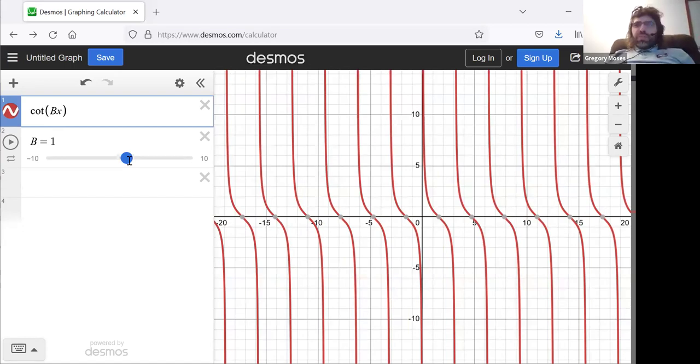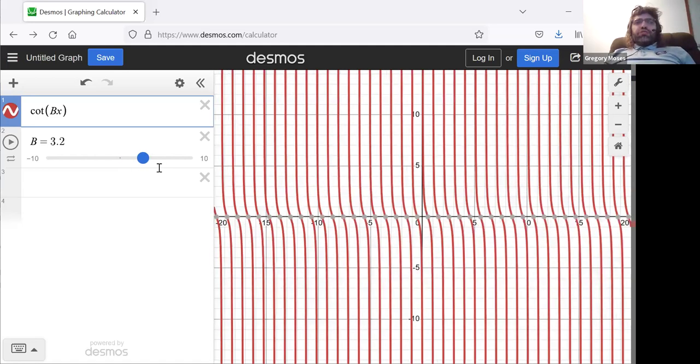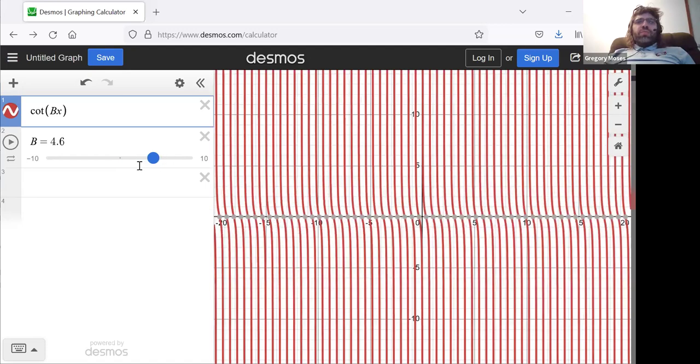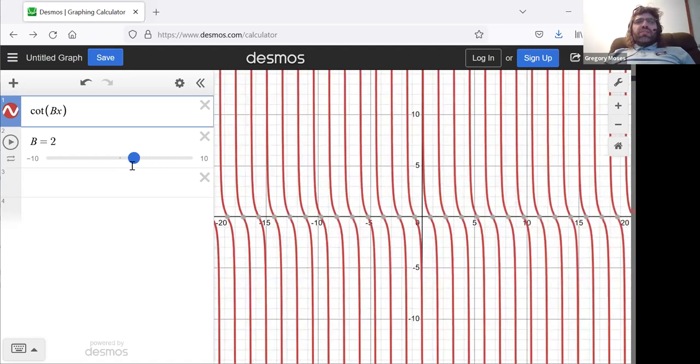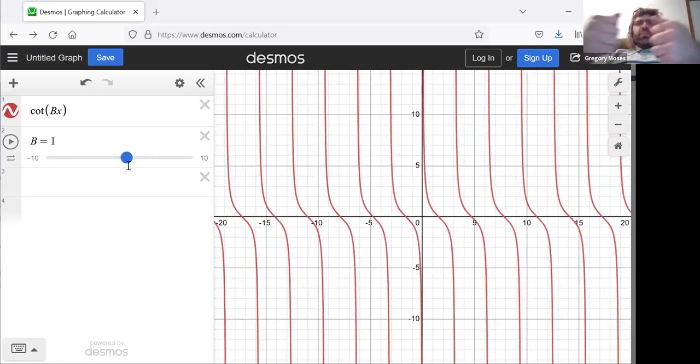Increasing B will smoosh this graph horizontally. Decreasing B towards zero will have the opposite effect. It will pull this graph apart horizontally.